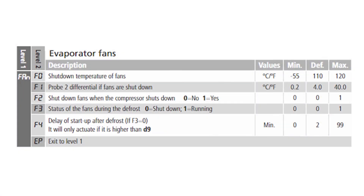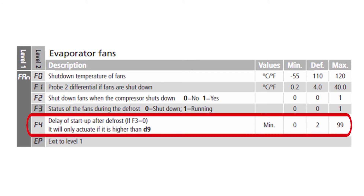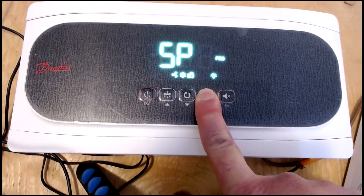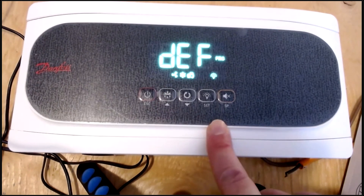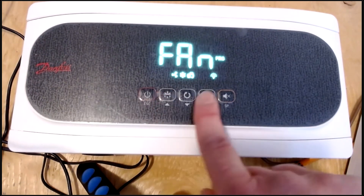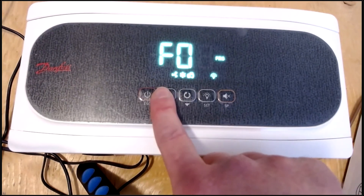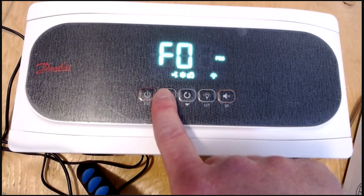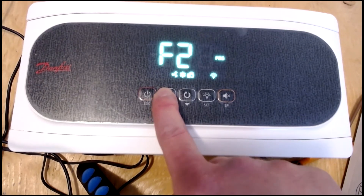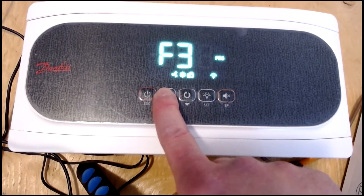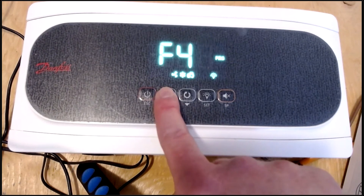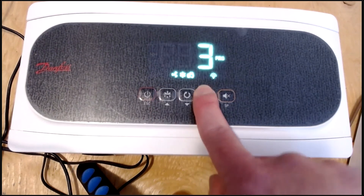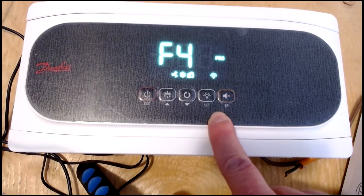Now from here, we will need to go to the level one parameter fan and select F4. So let's scroll to the level one parameter fan and hit set. From there, we will need to scroll until we see F4, which is the parameter we need to modify to change the fan delay after defrosting. There's F4 and you can see the default value is two. Let's change that to three. Hit set and we're back to the level two parameter.